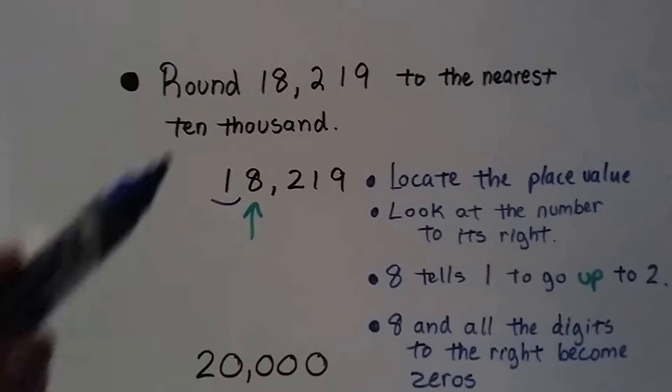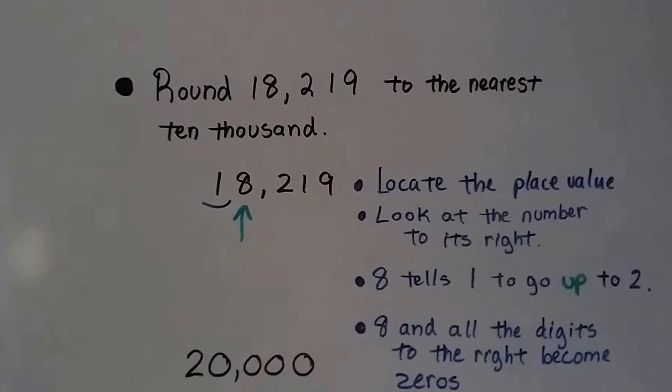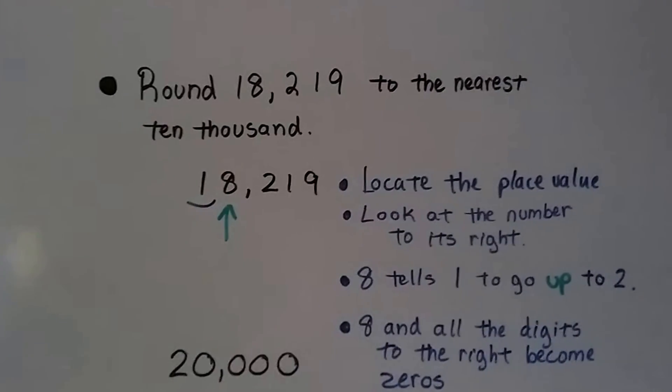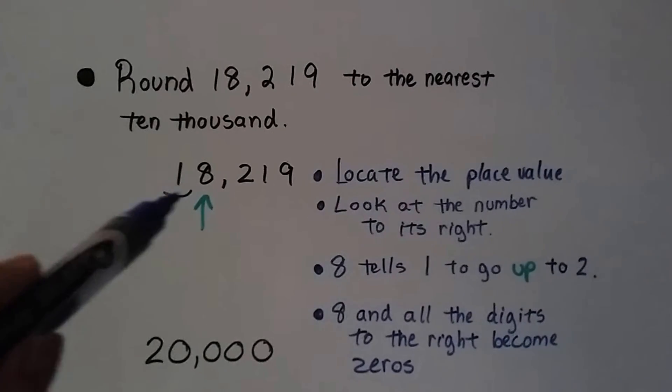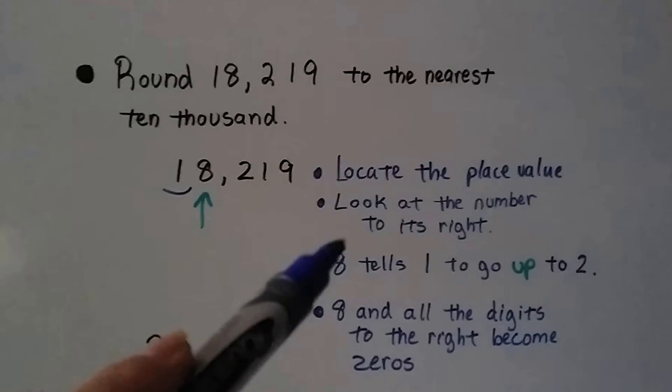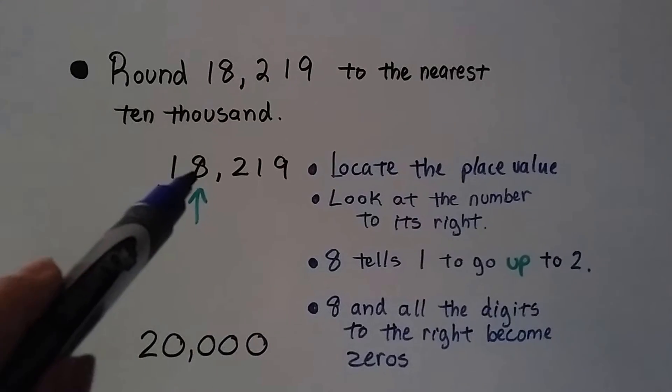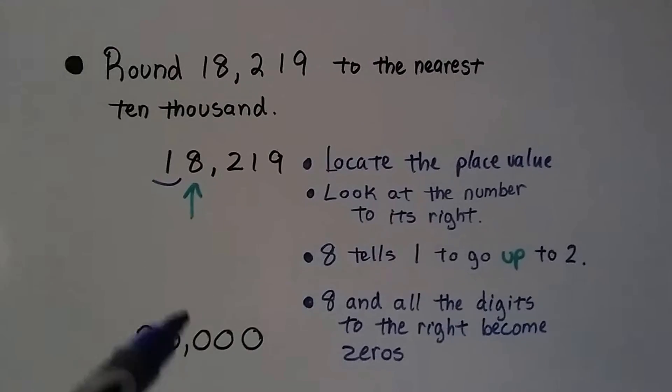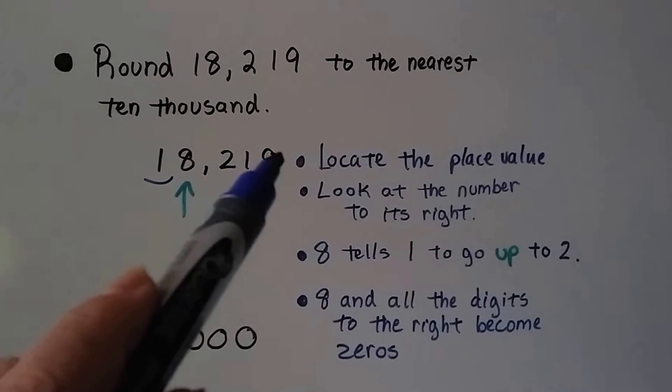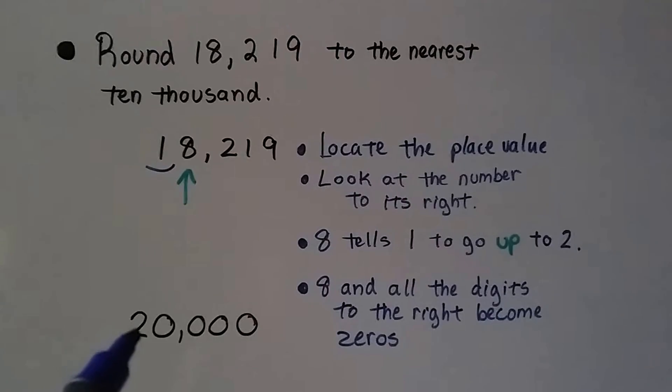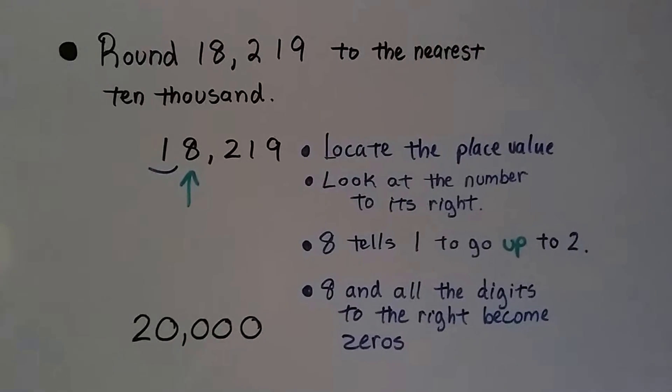Round 18,219 to the nearest 10,000. First thing we do is locate that place value, the 10,000. It's right here. And we look at the number to its right. It's an 8. The 8 tells the 1 to go up to a 2. Then the 8 and all these numbers to the right turn into zeros. So it goes up to a 2. We get 20,000.